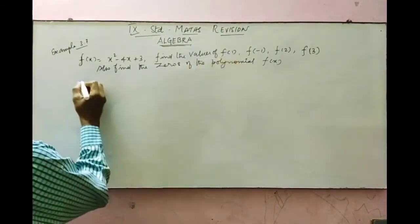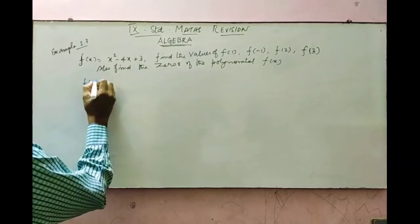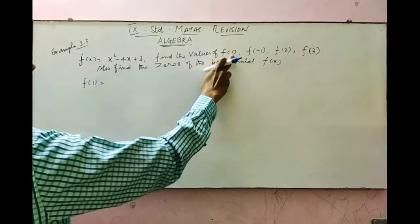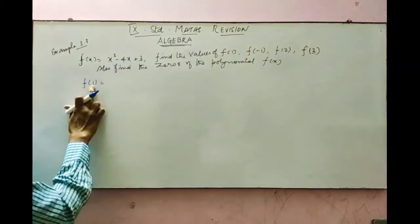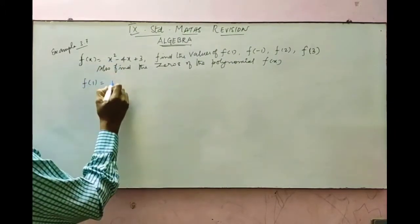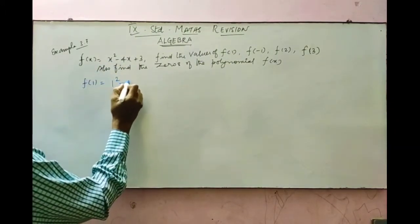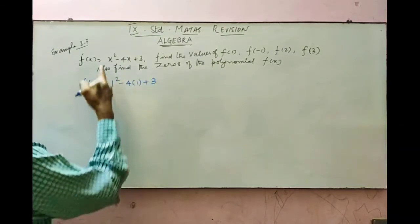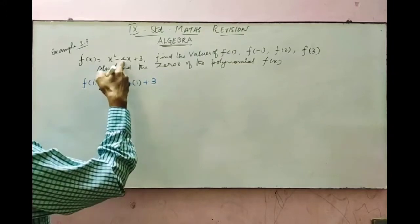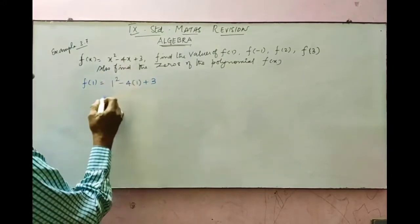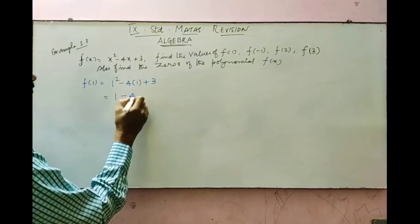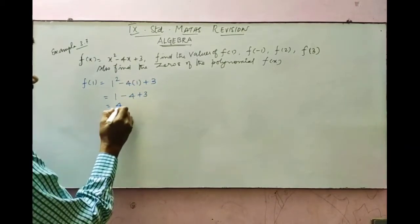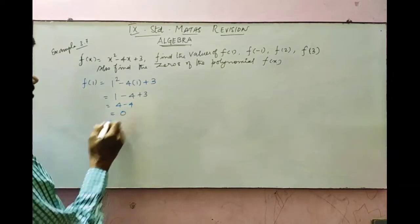To find f of 1, substitute x equals 1 into the polynomial: 1 squared minus 4 times 1 plus 3. That gives 1 minus 4 plus 3, which equals 0. So f of 1 equals 0.